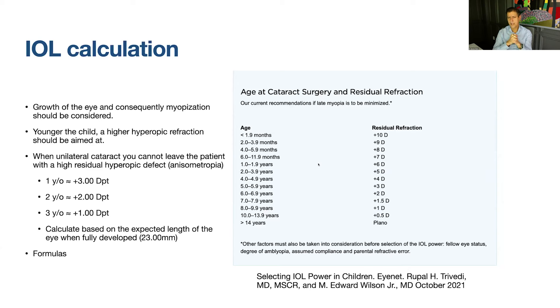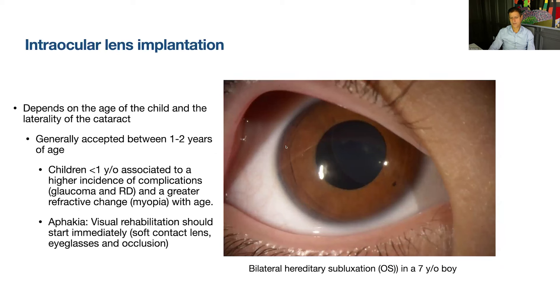There's a nomogram for the residual refraction to aim for depending on the age of the child. When children are very young, higher target refraction is needed — around 10 diopters — but we tend not to implant lenses at such a young age due to higher complications. After one to two years of age, the target moves to around plus 6, plus 5, plus 4, plus 3, and so on. The surgical approach for pediatric cataracts is based on the age of the child, and the technique should vary accordingly.